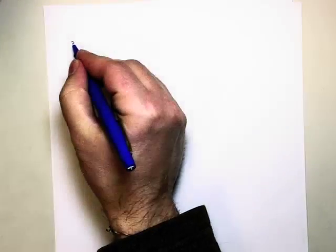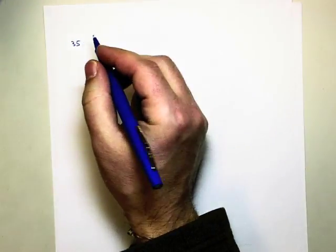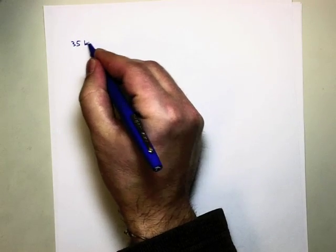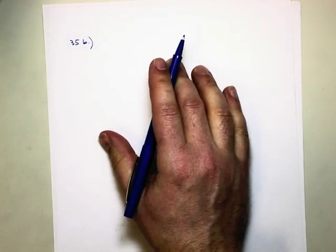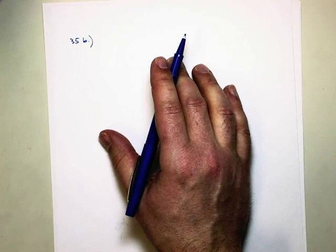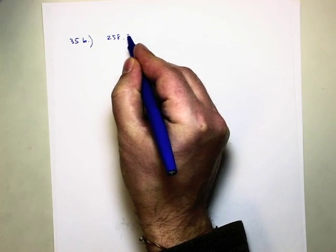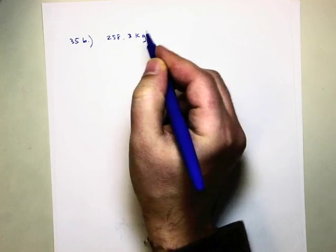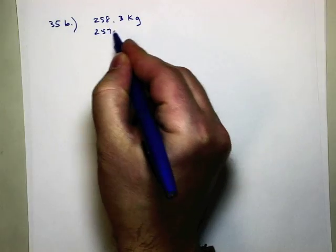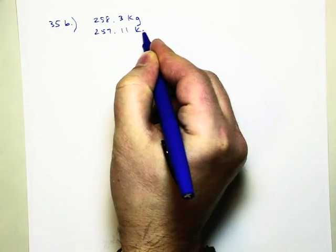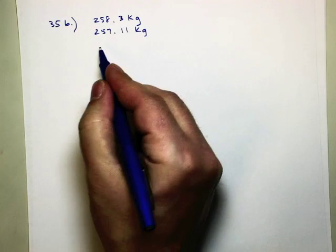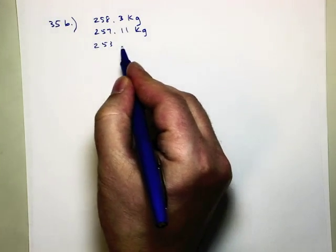Now what does that actually mean? Well, let's go ahead and we'll look at a problem and we'll kind of do it on the fly with 35B. In this problem you have three masses being added. You have 258.3 kilograms, you have 257.11 kilograms, and then 253 kilograms.